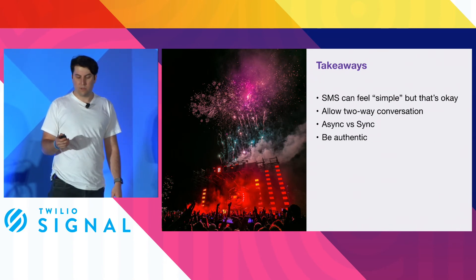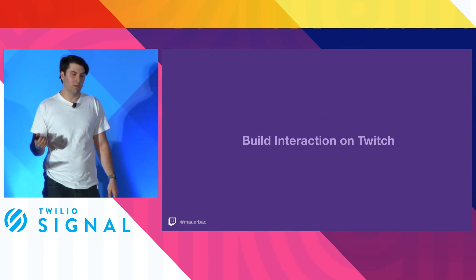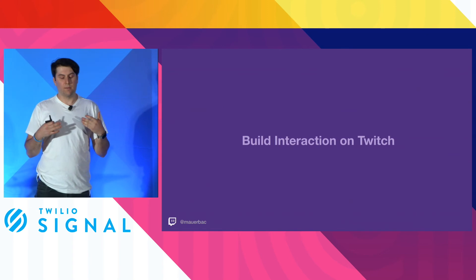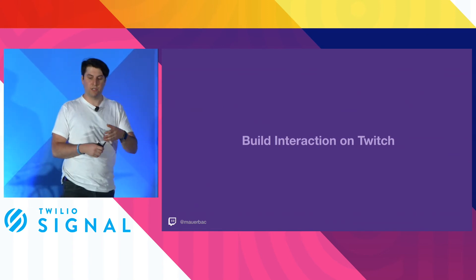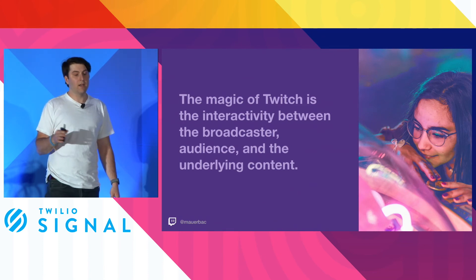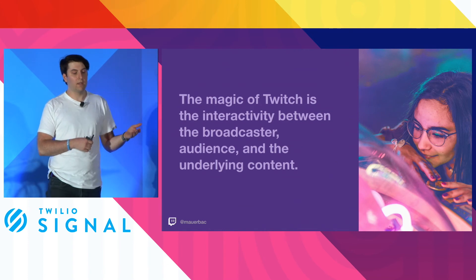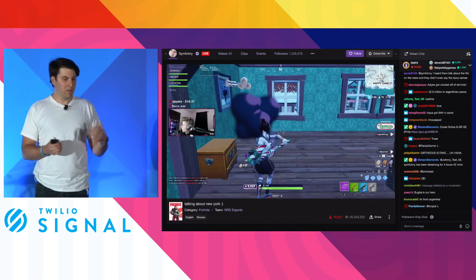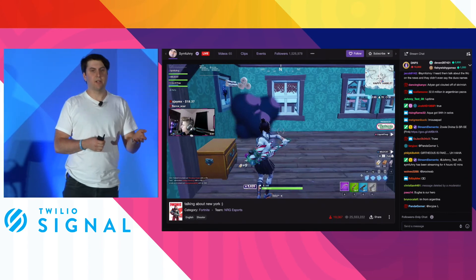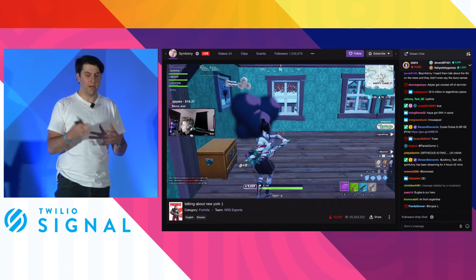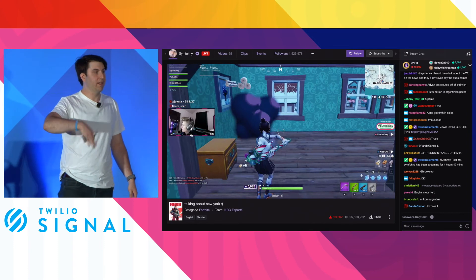Now I'll switch gears and talk about Twitch. An interesting parallel is that SMS can seem really simple because Twilio abstracts a lot away from you—and the same goes for Twitch. The magic of Twitch is the relationship between the broadcaster, the audience, and the underlying content. In case you're not familiar, it's a live streaming platform mostly for video games but with a lot of other categories. In this screenshot, we have a broadcaster streaming Fortnite with 19,000 viewers, and all the interactivity is happening in the chat on the right-hand side.